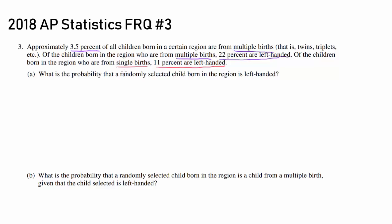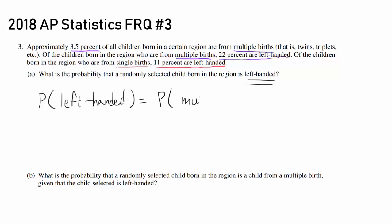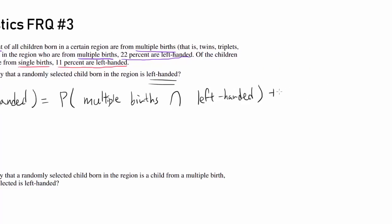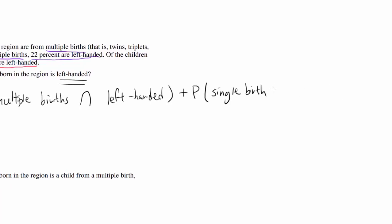Part A: What is the probability that a randomly selected child born in the region is left-handed? We want to find the probability that the person is left-handed, and there are two ways of being left-handed. One way is being from multiple births and being left-handed, or you can be from single births and being left-handed.